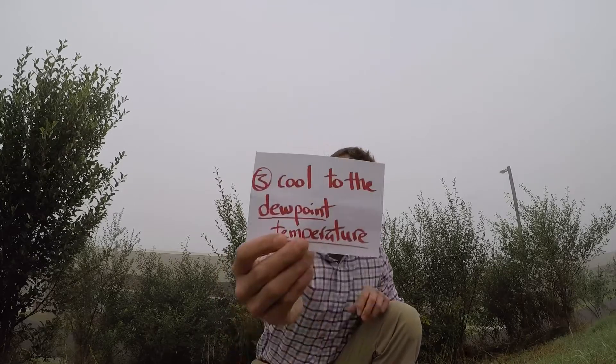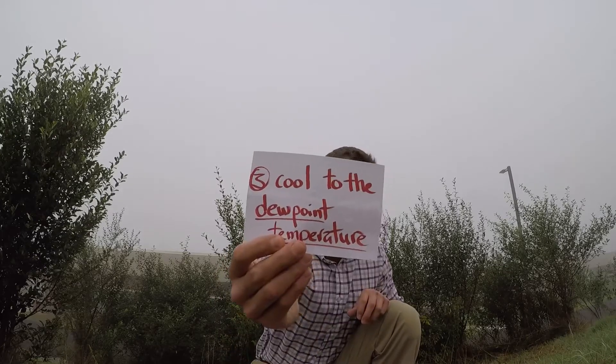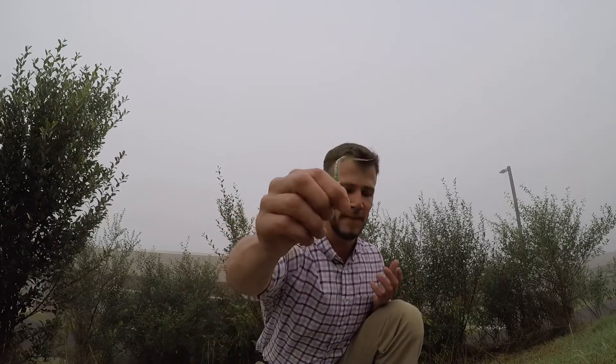And the third and final ingredient for cloud formation is that the air needs to cool down to the dew point temperature. That's the temperature at which dew will form, and essentially dew — the stuff that's on this grass right here — is the same thing as a cloud. It's just liquid water. So those are the three ingredients for how clouds form. Moore out.